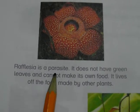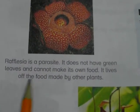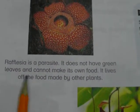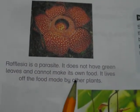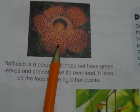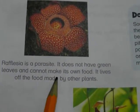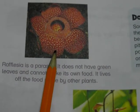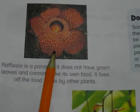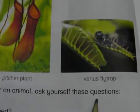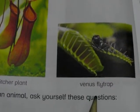Rafflesia is a parasite. It does not have green leaves and cannot make its own food. It lives off the food made by other plants. Other examples include mushrooms, pitcher plants and the Venus flytrap.